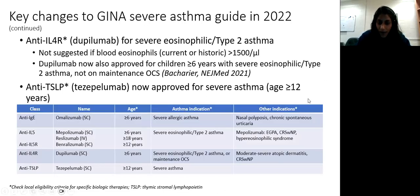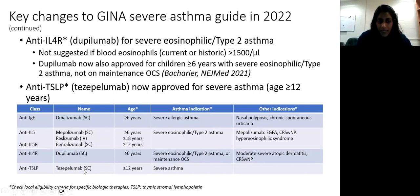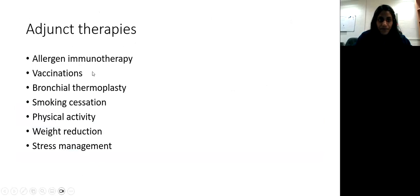A summary table of available biologics includes: omalizumab (anti-IgE), mepolizumab, benralizumab, dupilumab, and tezepelumab. Except for tezepelumab, all others require specific diagnostic criteria such as eosinophil levels or IgE levels to qualify patients for the appropriate biologic.